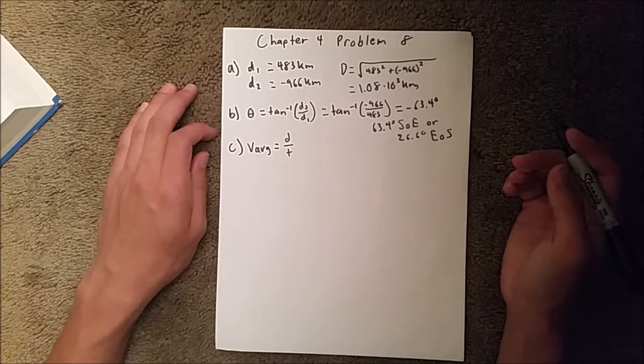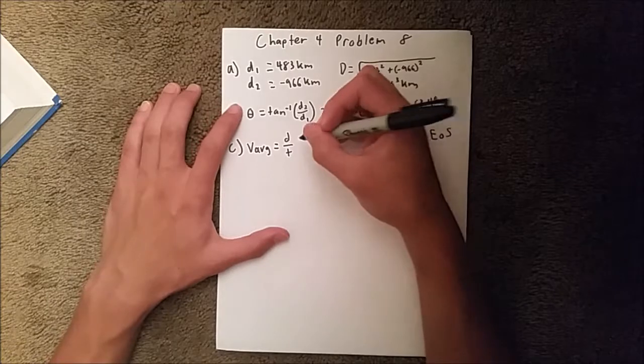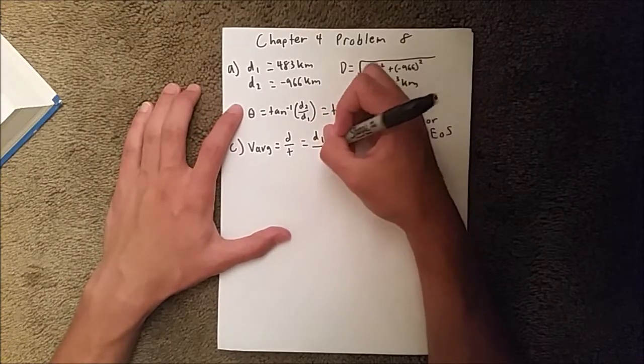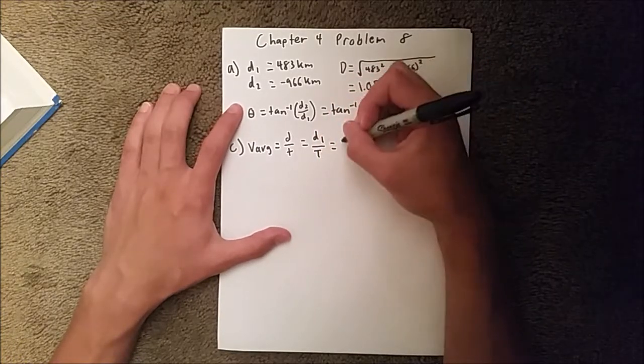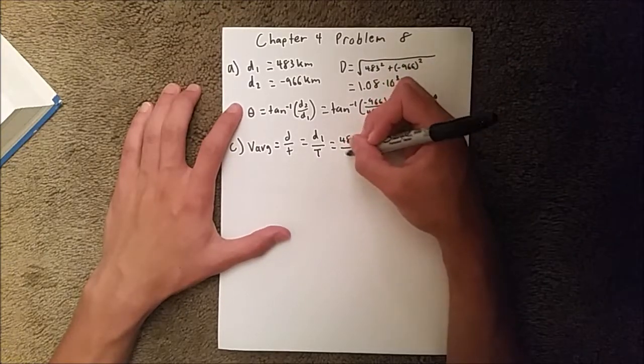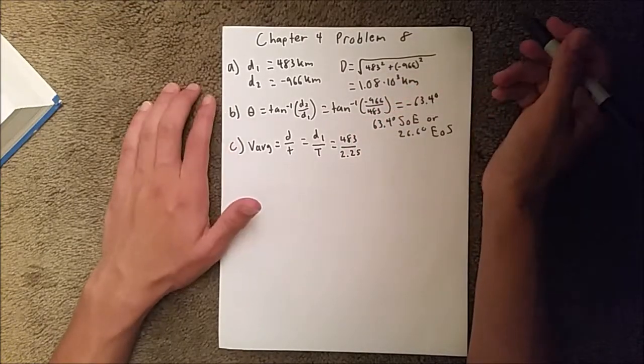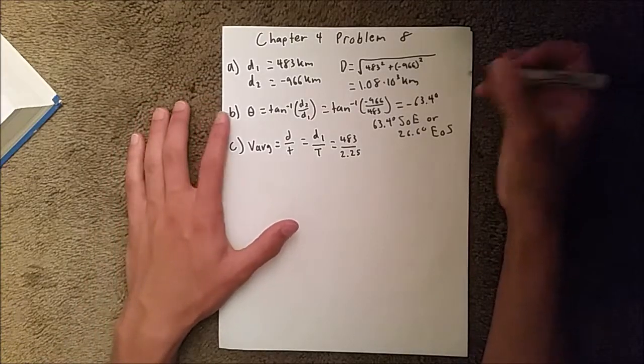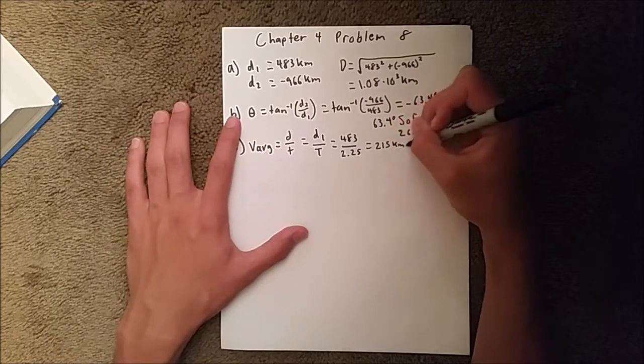And so, if we do that, we get the distance of trip 1 over the total time. And that is 483 over, and it's going to be by hour, which we know there's 2.25 hours. So, we are given that in the problem. So, that's going to be 215 kilometers per hour.